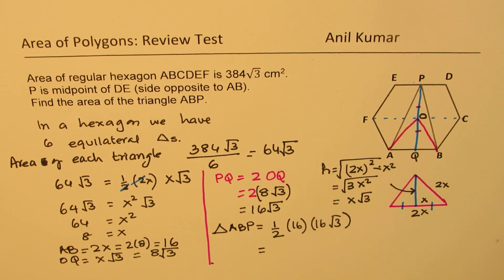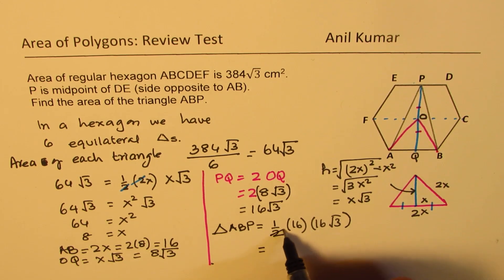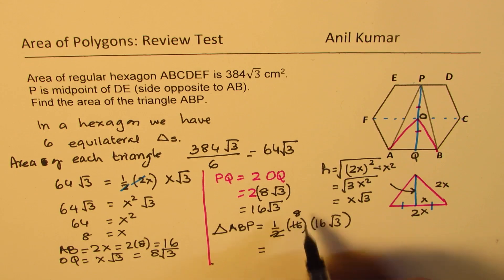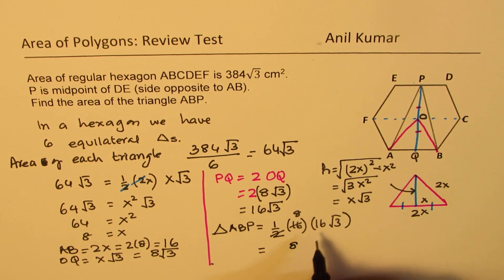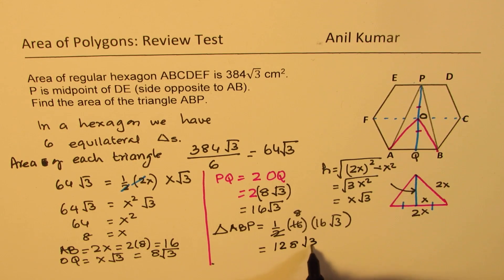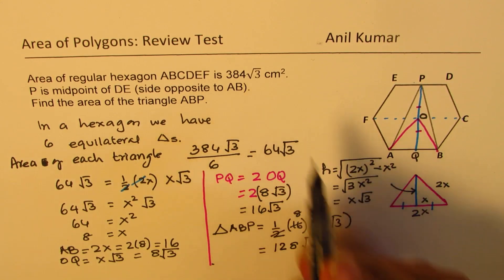When we calculate, we get 16 times 8, and 8 times 16, so we get 48, 8 and 4, 128, square root 3, units will be centimeters square.